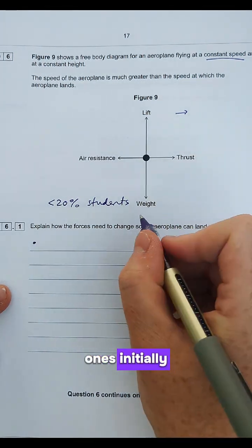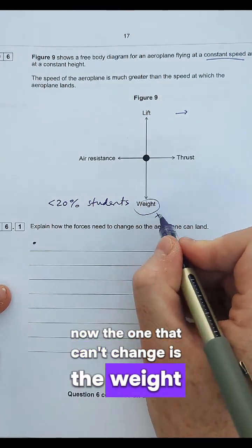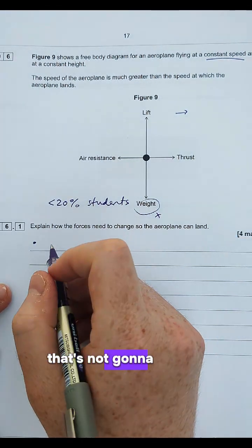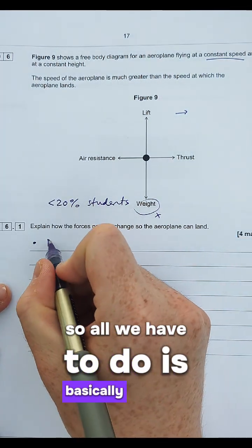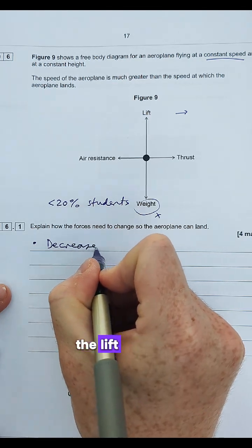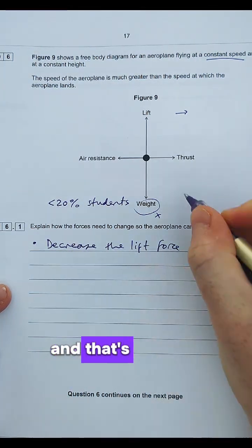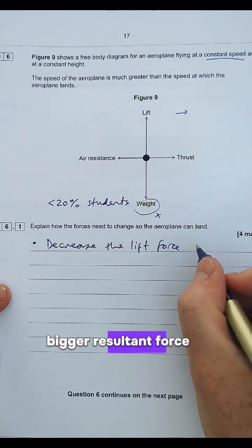I'm going to talk about the vertical ones initially. Now the one that can't change is the weight of the plane because that's the weight of the plane unless you're chucking passengers out that's not going to go well. So what we have to do is basically decrease the lift force on the plane and that's then going to mean there's an overall bigger resultant force in this direction.